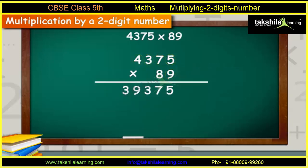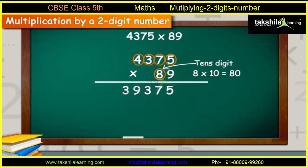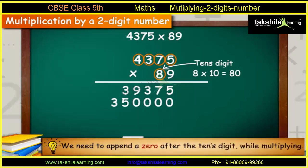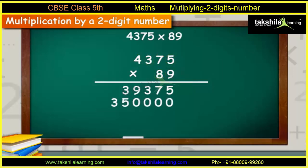Place this number as shown. Now, let us multiply the multiplicand 4,375 with the tens-digit of the multiplier 89, which will be 4,375 into 80, which comes out to be 3,50,000. Please note, we need to append a zero after the tens-digit while multiplying. Place this number as shown below 39,375.